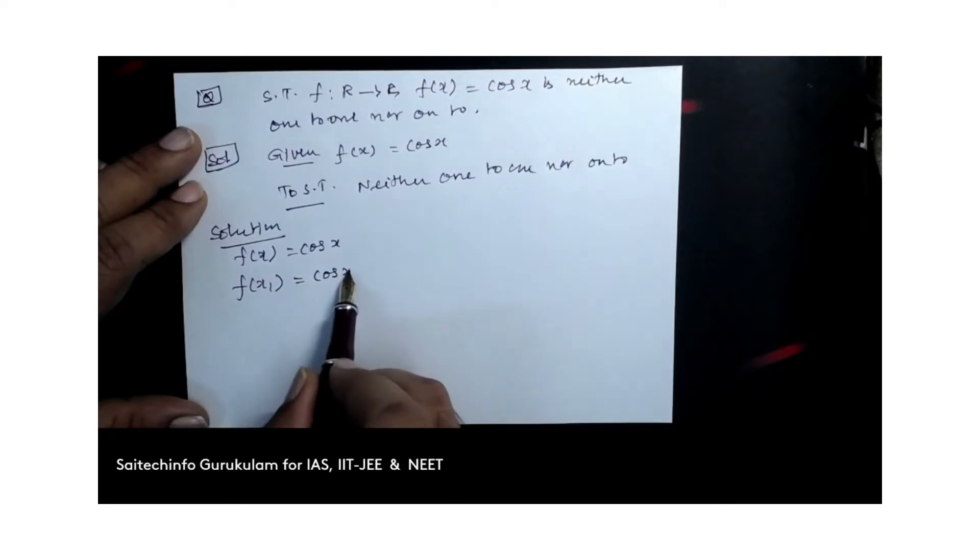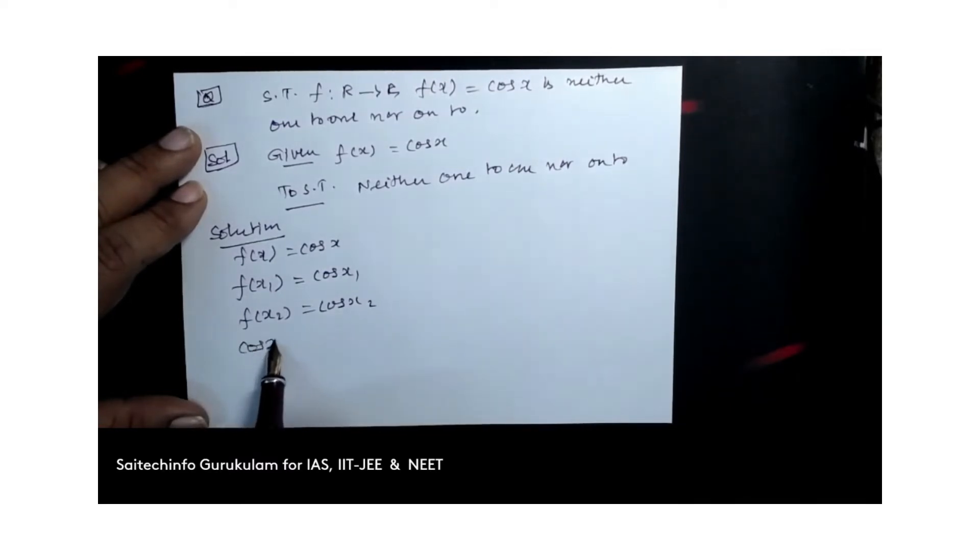f of x1 equals cos x1. f of x2 equals cos x2. So cos x1 equals cos x2.